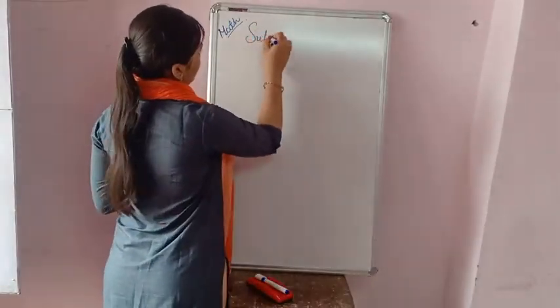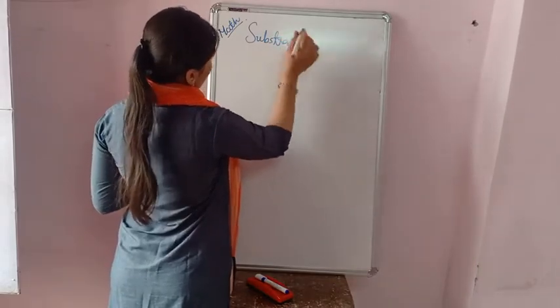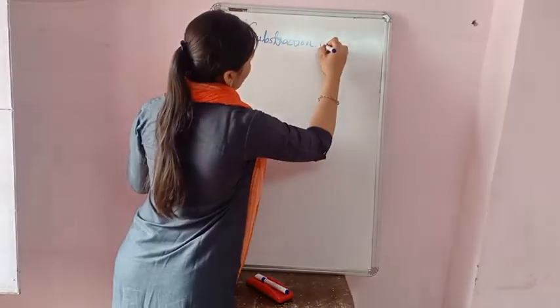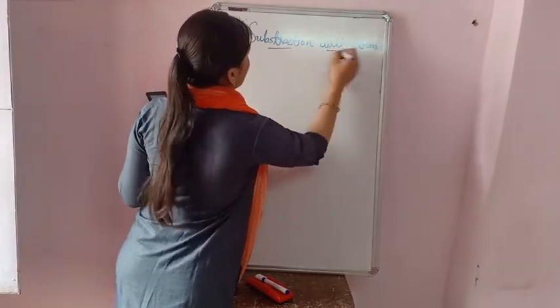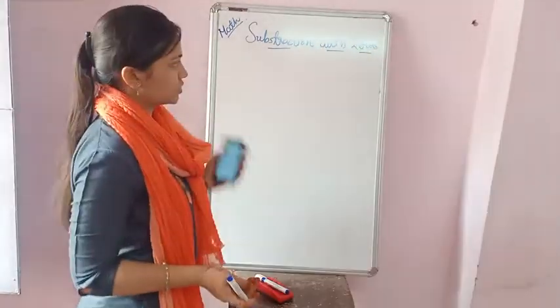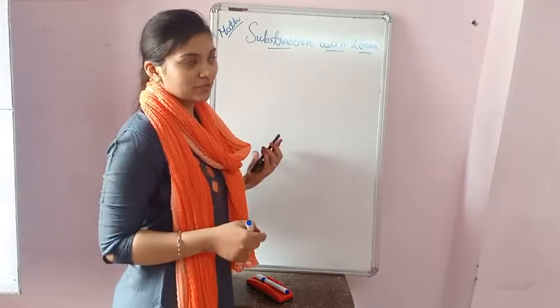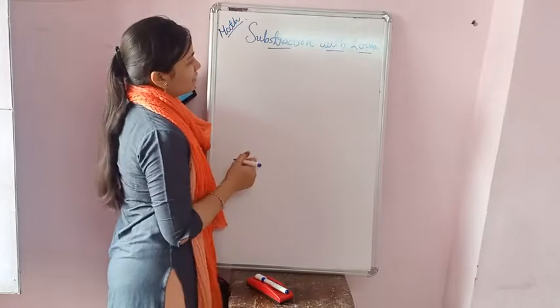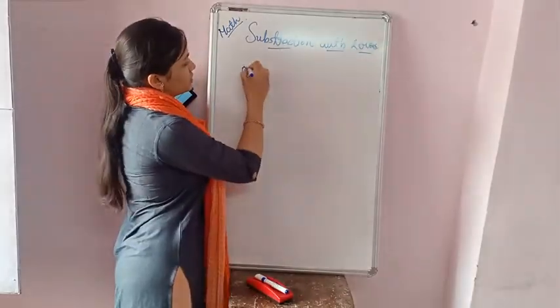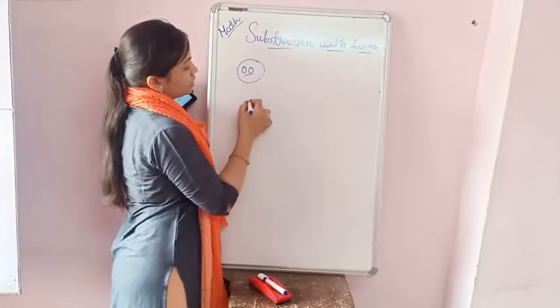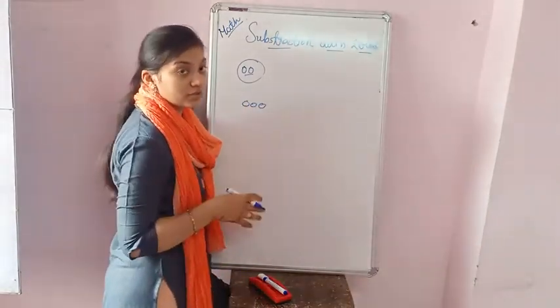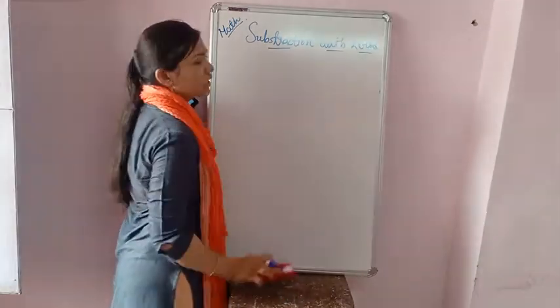Hello students. Now we are going to learn the next topic of subtraction — that is subtraction with zeros. We already learned about this topic but I am recalling it. Subtraction with zeros: when we solve examples, we do subtraction with zeros. If there is one zero you can directly do the subtraction, but if there are two zeros or three zeros, how is it possible? Let's take an example.